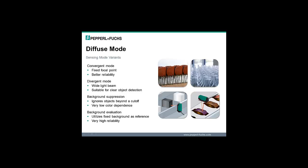Diffuse mode sensors have several special variations designed to overcome some of the limitations associated with diffuse mode sensing. Convergent sensors have a fixed focal point to provide better reliability compared to basic diffuse sensors. Divergent sensors have a wide light beam that is very sensitive to minor differences in received light and are suitable for clear object detection. Background suppression sensors detect objects up to a designated cutoff point and ignore objects beyond, with high reliability and very low dependence on object color. Background evaluation sensors utilize a fixed background as a reference and also have very high detection reliability.